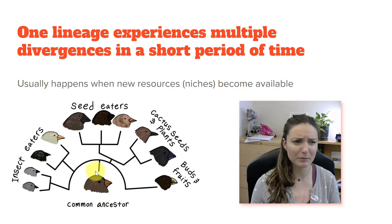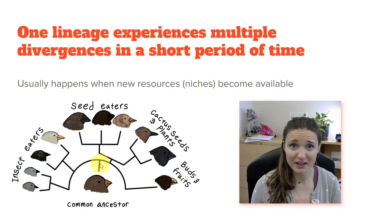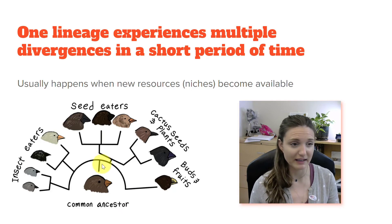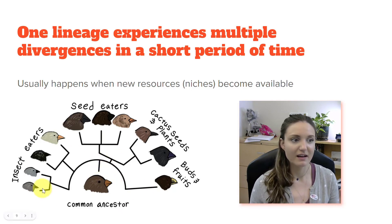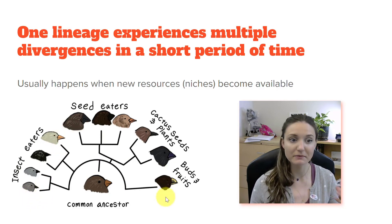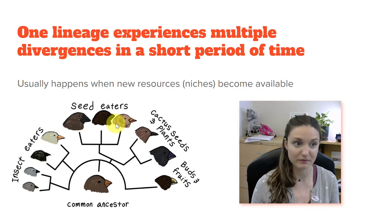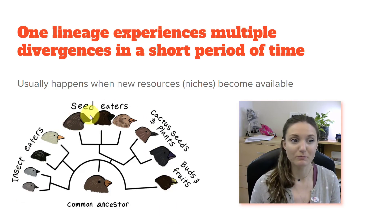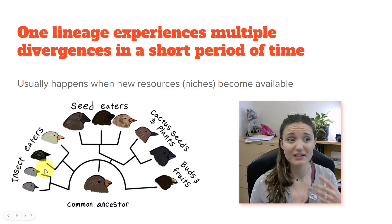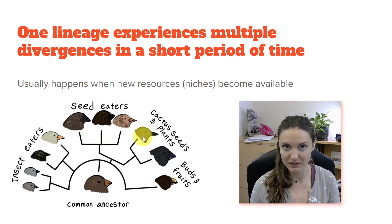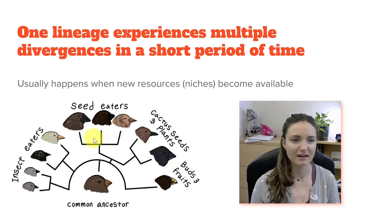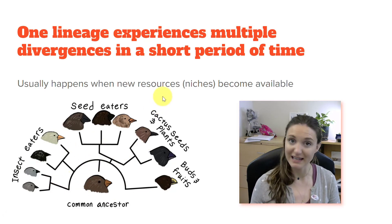These are Hawaiian honeycreepers. From one lineage that first established itself on the Hawaiian islands, it quickly diverged. We think this divergence was driven mainly by the many different types of food available — so many different food resources that these birds quickly diverged and adapted through natural selection to exploit different food resources available on the islands that were not available to the common ancestor from the mainland. This is rapid, rapid diversification from one lineage — adaptive radiation.